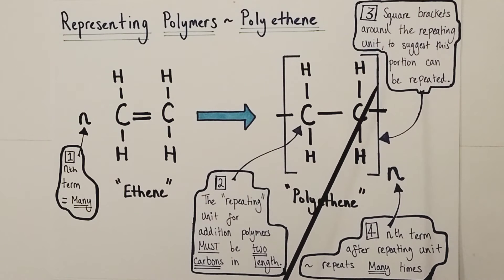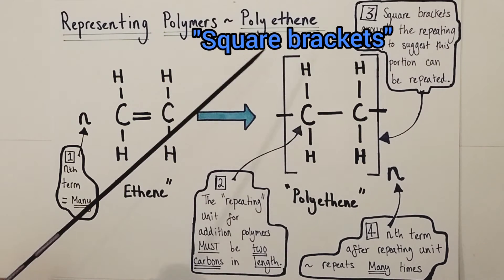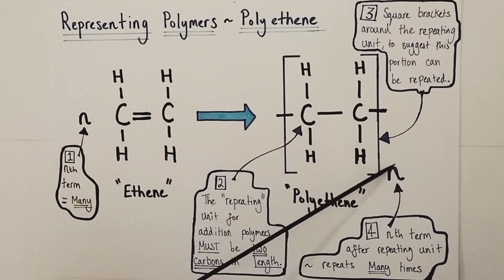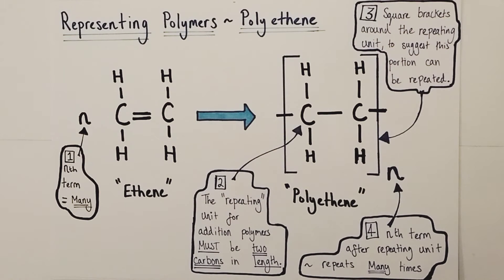Now comes the next key convention of the repeating unit which is the square brackets. Square brackets are drawn around the section which will repeat through the empty bonds, the continuation bonds either side, and that helps to emphasize that this portion will repeat multiple times again and again in either direction. It's trying to emphasize that this is a long chain which repeats this particular portion multiple times. Finally there's another nth term, but this time it's after the repeating unit, and that's just there to emphasize that this portion will repeat many many times to create our long chain polymer.